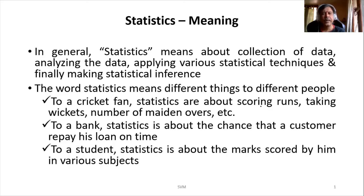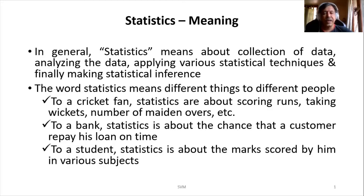The word statistics may mean different things to different people. For example, if you take a cricket fan, you may be talking about statistics about scoring runs, taking wickets, number of maiden overs, number of sixes, number of boundaries, number of singles taken. All those things may be a part of his statistics. For a bank, if you consider any customer, what is the chance of him making his repayment of his loan on time? That can become a statistic for them.